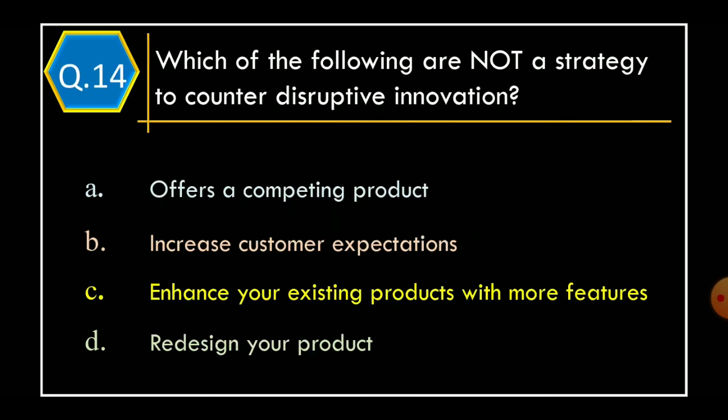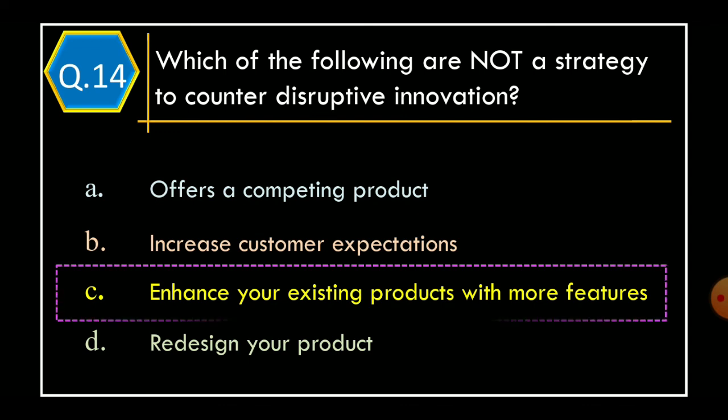Question 14. Which of the following is NOT a strategy to counter disruptive innovation? Option A: Offers a competing product. Option B: Increase customer expectation. Option C: Enhance your existing products with more features. Option D: Redesign your product. The correct option is Option C: Enhance your existing products with more features.